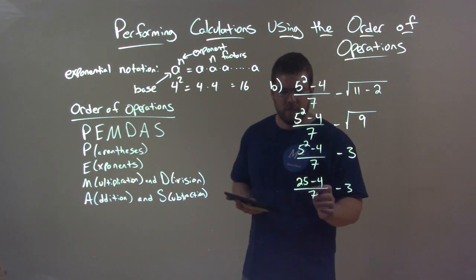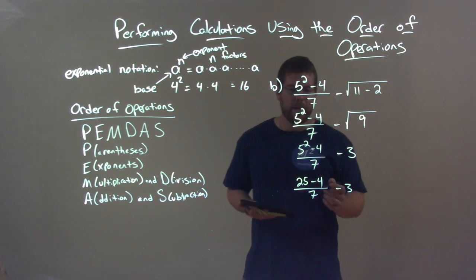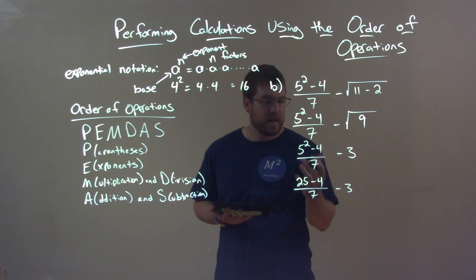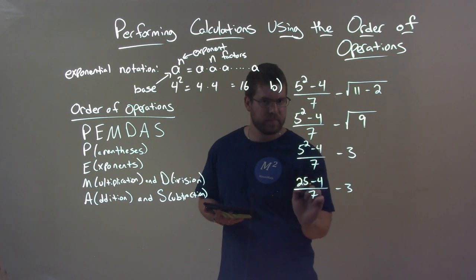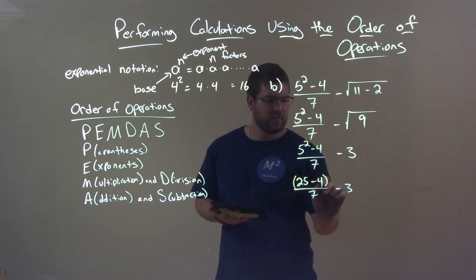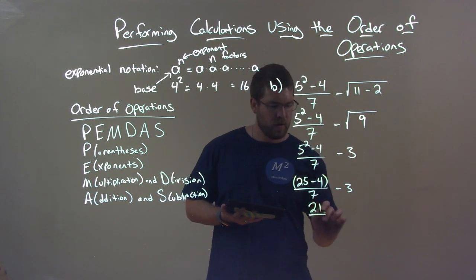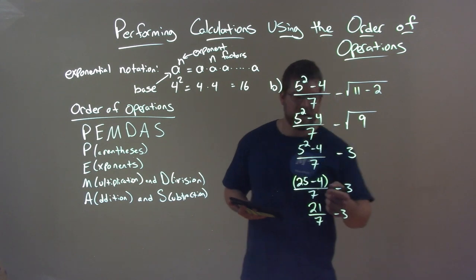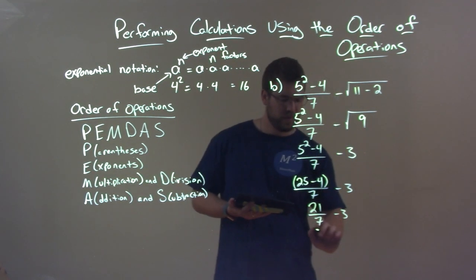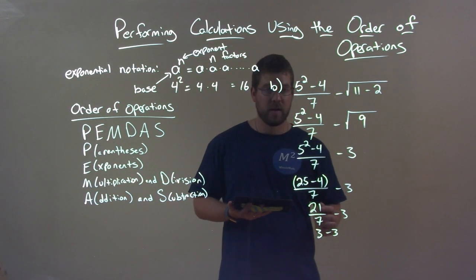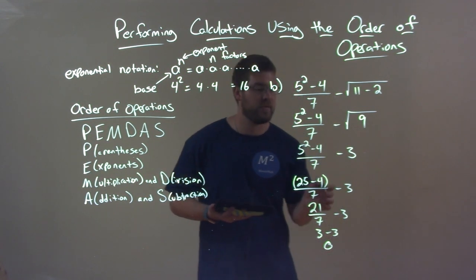This is where it gets a little tricky. At first you want to say division first, but the operation tells us that 25 minus 4 needs to happen first — that subtraction in the numerator. You can imagine there are parentheses around the numerator. 25 minus 4 is 21 over 7, minus 3. Next is division: 21 divided by 7 is 3. So we have 3 minus 3, and our final answer is 0.